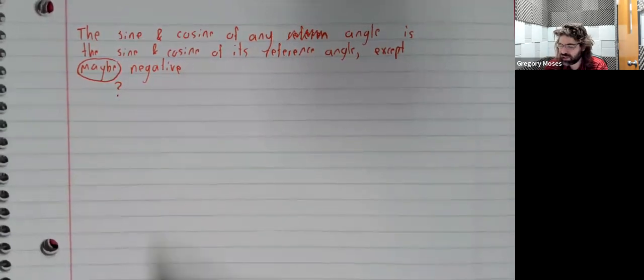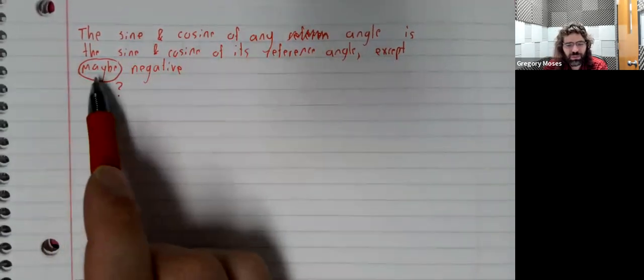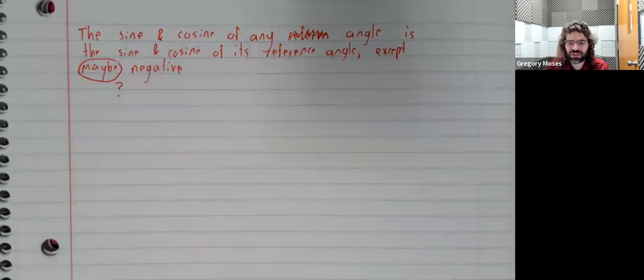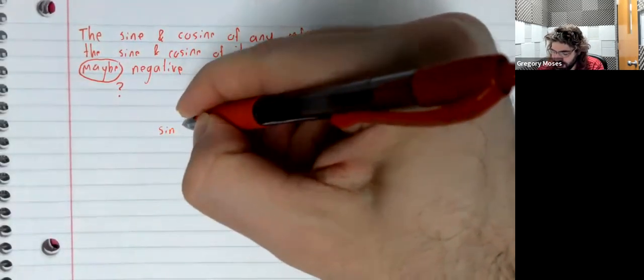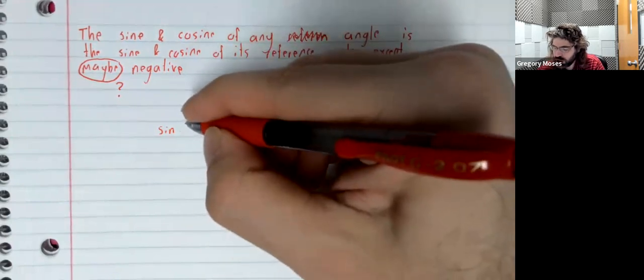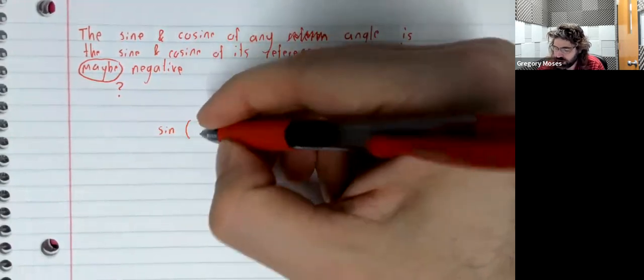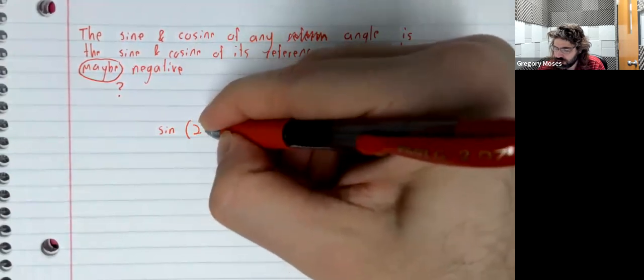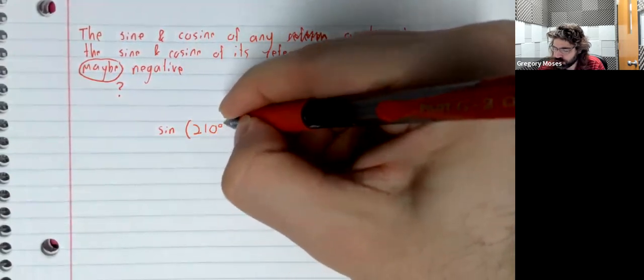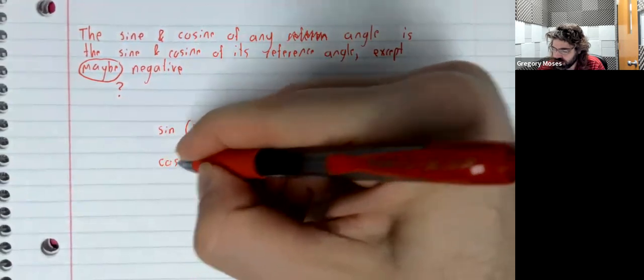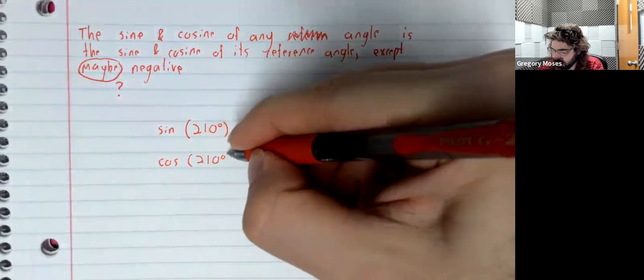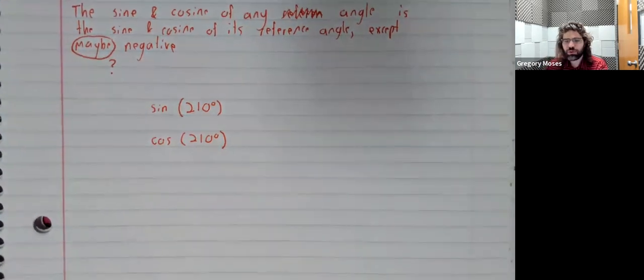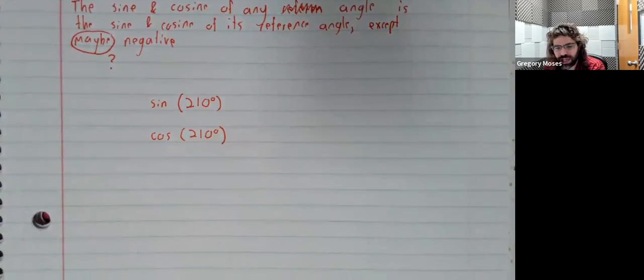And in particular, let's see how the except maybe negative part of this statement works in practice. Let's try to find the sine and the cosine of 210 degrees without reaching for our calculator.